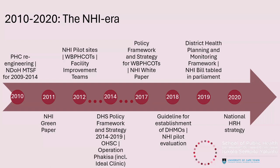The NDOH's medium-term strategy framework from 2009 to 2014 included a 10-point plan that identified priority sub-districts and established district management teams in 52 districts. In 2011, the NHI Green Paper proposed establishing district health authorities as a contracting unit for primary healthcare to be supported by the NHI fund. In 2012, pilot districts were launched with a focus on PHC re-engineering, ward-based outreach teams and facility improvement teams were established, initially in a few districts and later expanded.